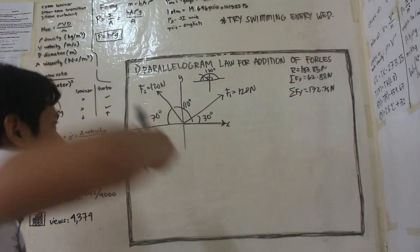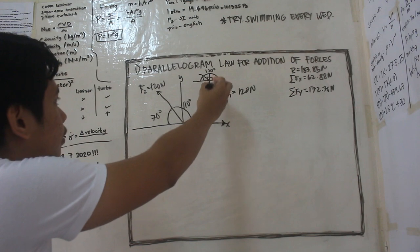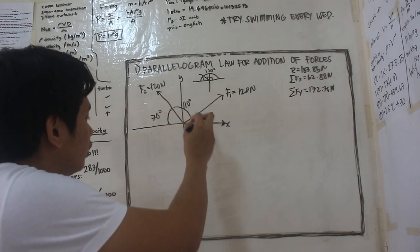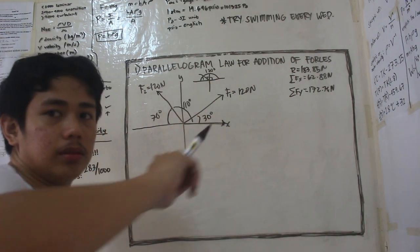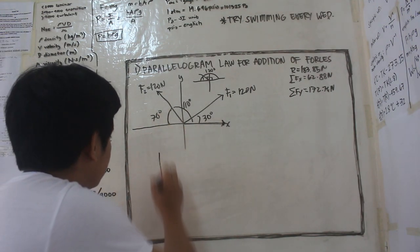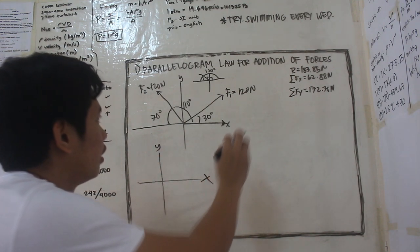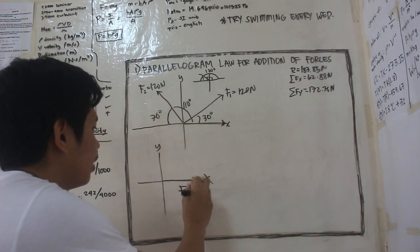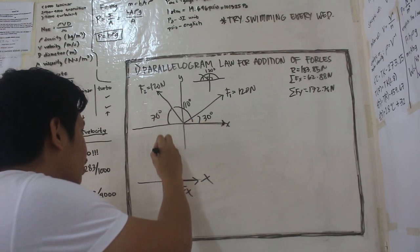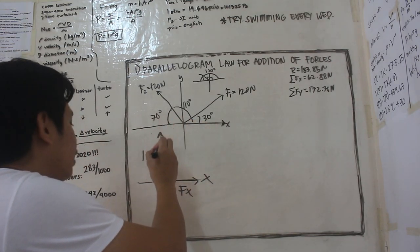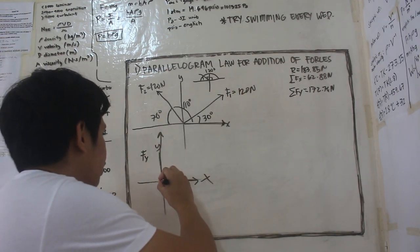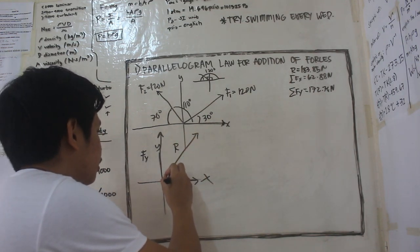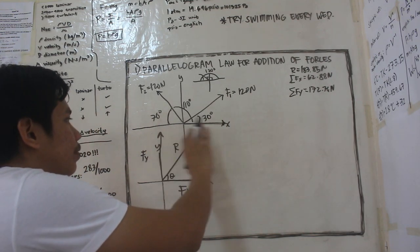So ano nga bang ibig sabihin ang resultant? So ito yung y-axis natin, ito yung x-axis natin. So ang sabi dun, ang sa f natin, ito 62.88 newtons, yan yung f of x natin. Tapos yung f of y natin, 172.76 newtons, yan yung f of y natin. So ang resultant natin, ito dito, ito yung r natin. So hanapin natin yung angle dito.